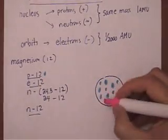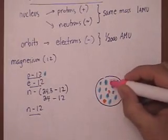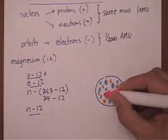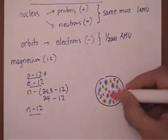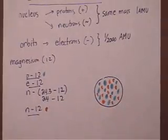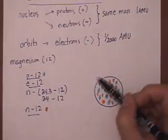And I need 12 neutrons, which will be pink. 1, 2, 3, 4, 5, 6, 7, 8, 9, 10, 11, 12. And my neutrons are pink. So that's the nucleus.